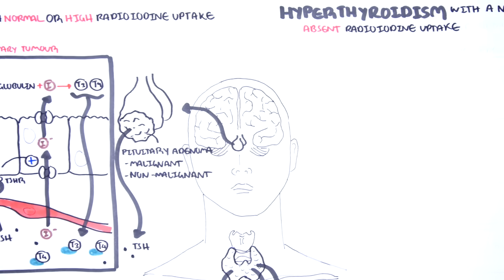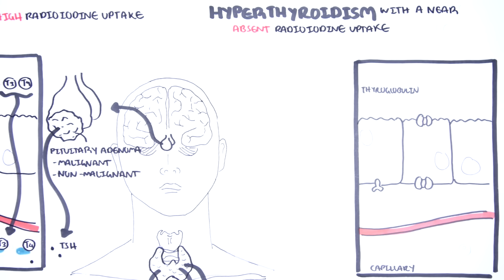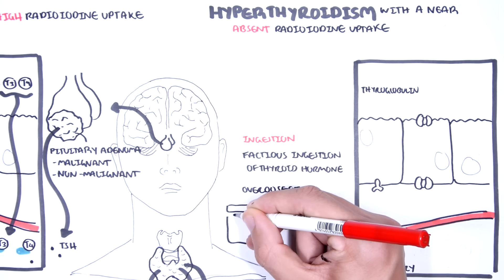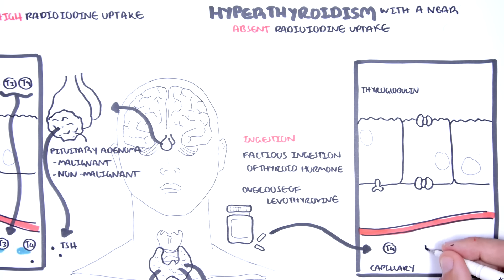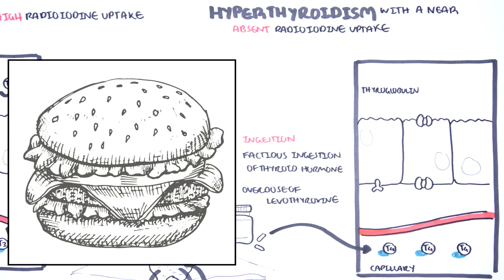The other cause of hyperthyroidism is where there is near-absent iodine uptake, meaning there is no actual increase in thyroid hormone synthesis in the thyroid gland. A good example is ingestion of thyroid hormones — either factitious ingestion or accidental overdose with levothyroxine. When you ingest thyroid hormones, they are absorbed easily in the gut and enter circulation, causing hyperthyroidism, while still exerting negative feedback to reduce TRH and TSH levels. An interesting historical example in this group is hamburger thyrotoxicosis: back when beef was being processed, some burgers contained the cow's thyroid glands, and eating them meant consuming stored thyroid hormone, raising blood thyroid hormone levels and causing hyperthyroidism.